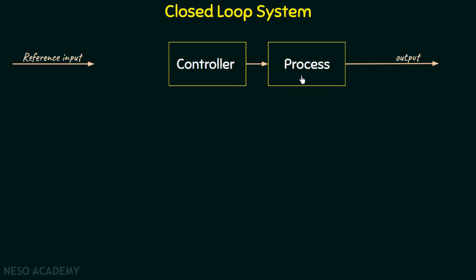We took one example of an immersion water heater in the previous lecture. If we put the heating rod inside the water and turn the switch on, the immersion water heater starts heating the water. But it does not know when to stop heating. That open loop system does not know your desired output, and that's why it goes on heating the water until you turn the switch off.